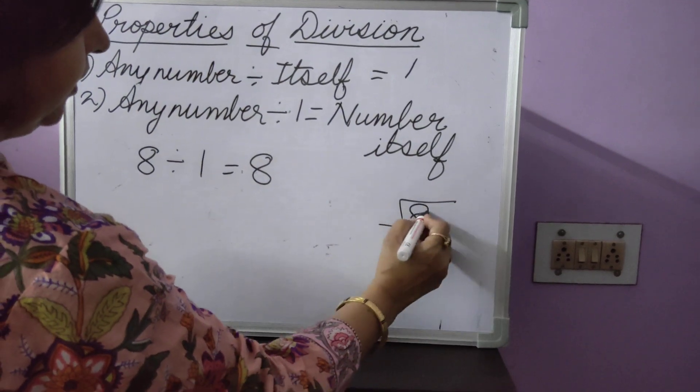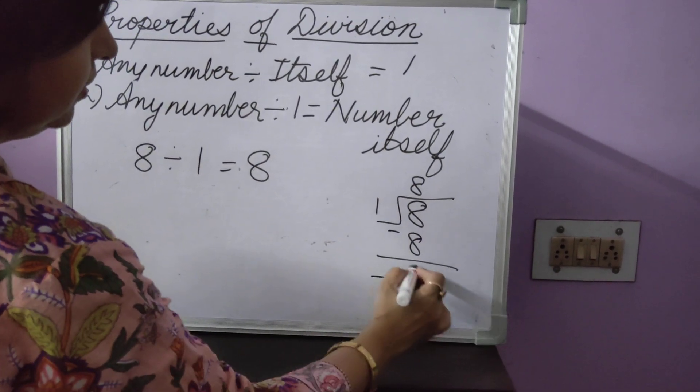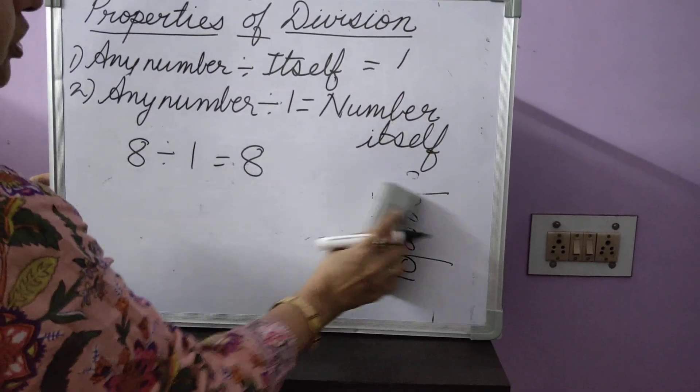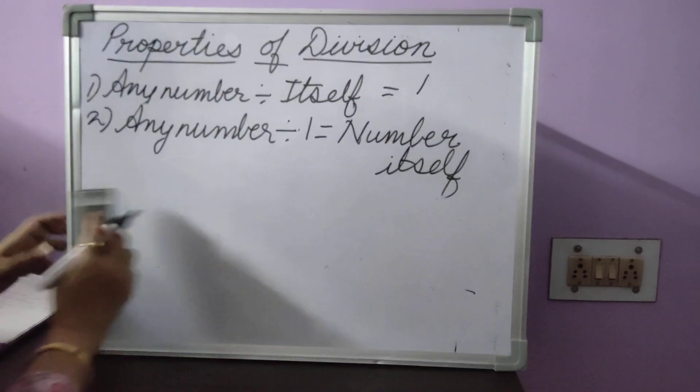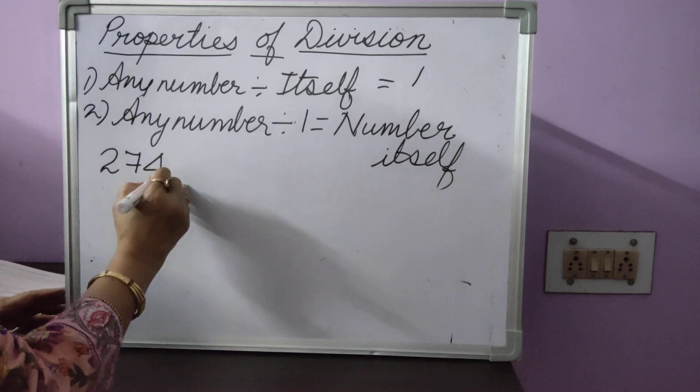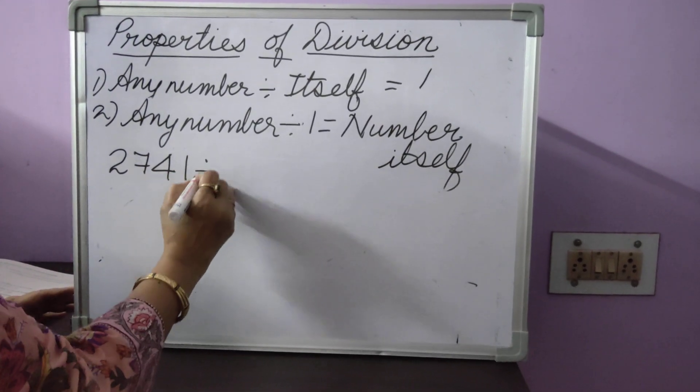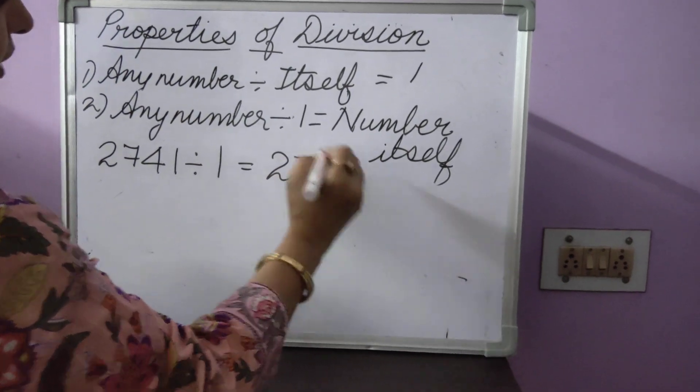How? Again, 8 divided by 1. 1 eights are 8 minus 0. No need to do the long division. Straight away, apply your second property. Then, 2741 divided by 1 will be equal to 2741.